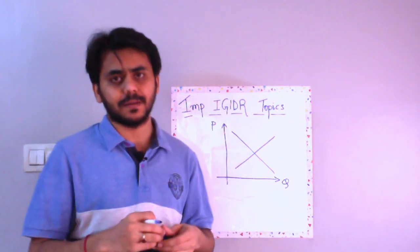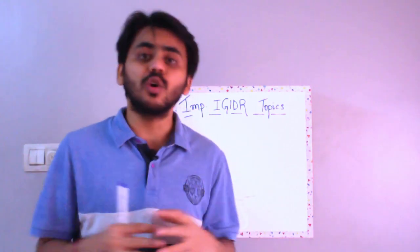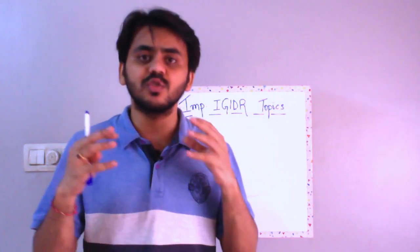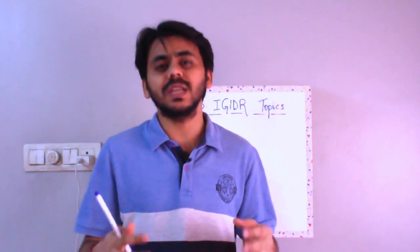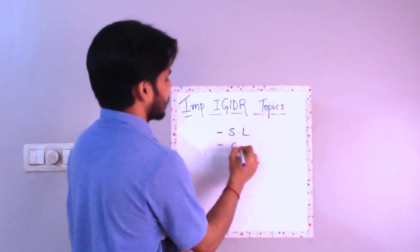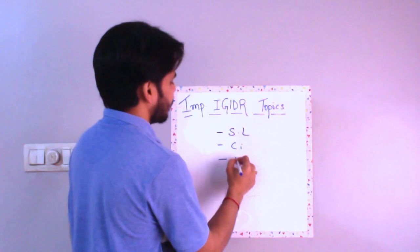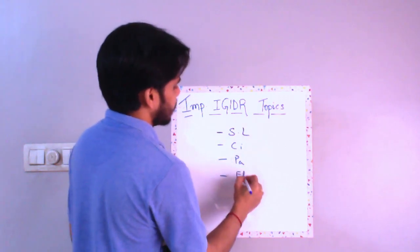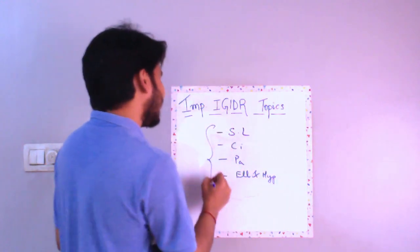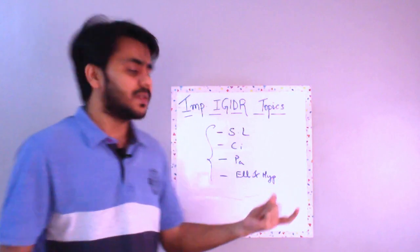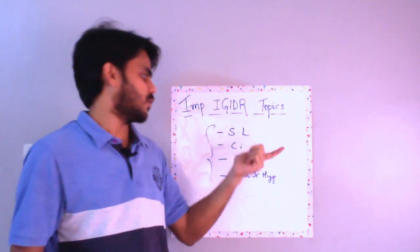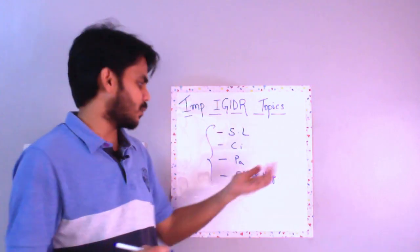What about the second topic? That would be coordinate geometry. I did not read coordinate geometry in my first IGIDR attempt and missed few questions on that. Very easy questions. So in coordinate geometry, which are the chapters? You have straight line, you have circles, you have parabola, you have ellipse and hyperbola. Now, the basic link between these chapters is you need to know their equations. What is the equation for a straight line? What is the equation for a circle? What is the equation for a parabola, ellipse and hyperbola?